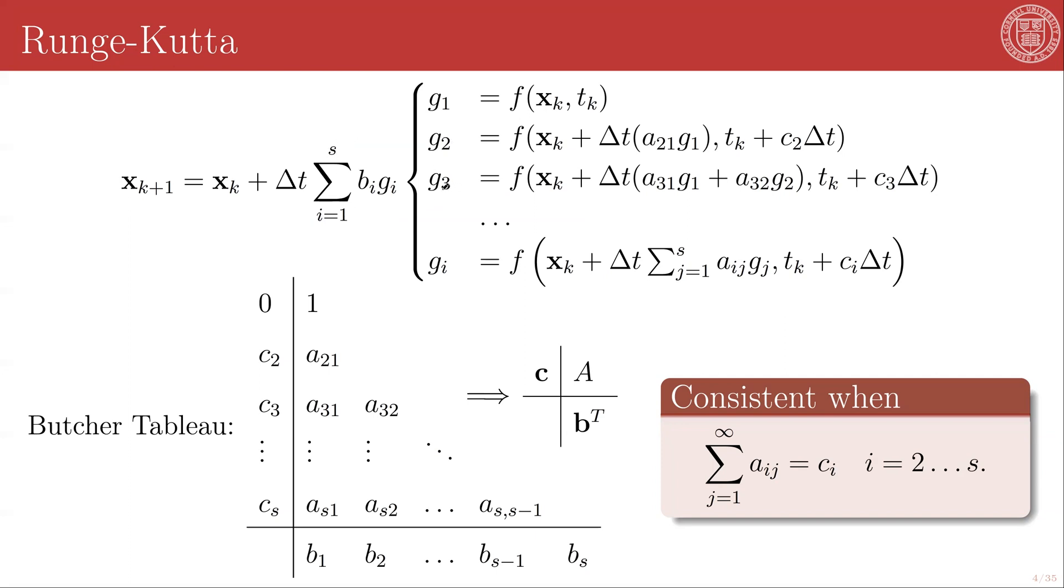The G_i functions are evaluations of your dynamics, of your function f, at x_k and t_k (that's the first one), and then x_k + Δt times some constant A_{2,1} times this first G_1, at time t_k + some constant c_2 times Δt, and so on. As you're going along, in general, each next G_i function is adding the previous function step to the x_k and is adding a new constant times Δt to the time step.